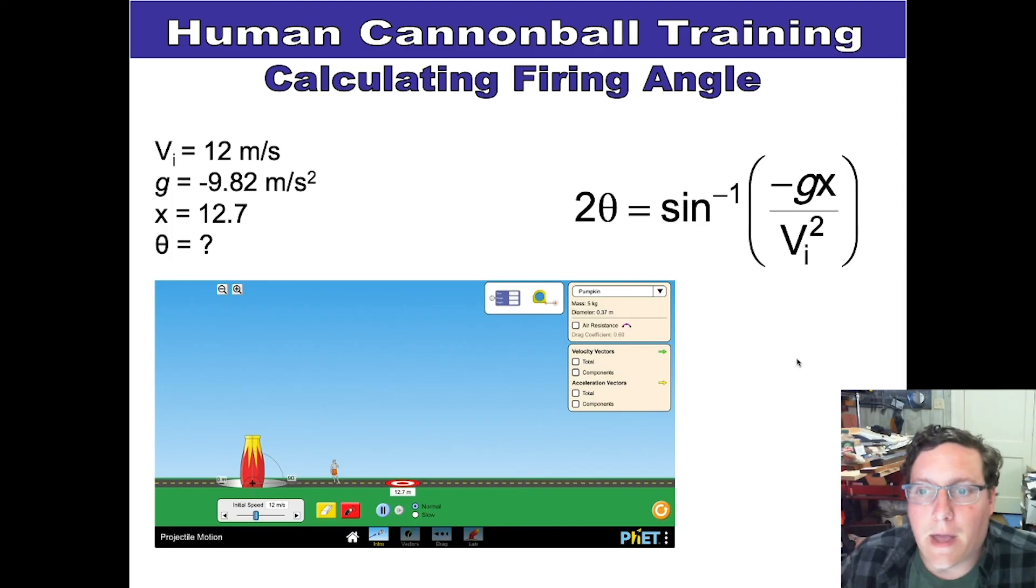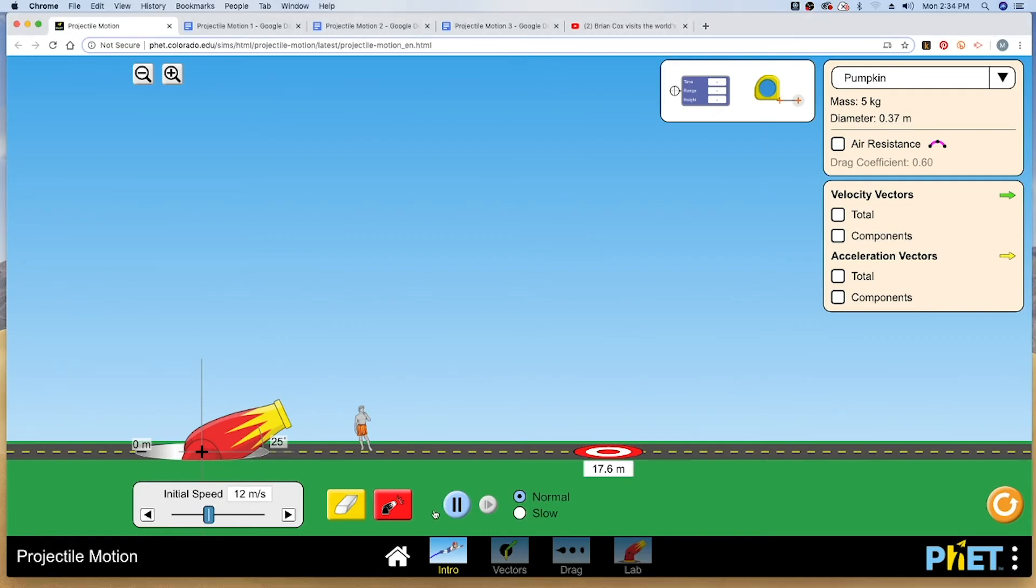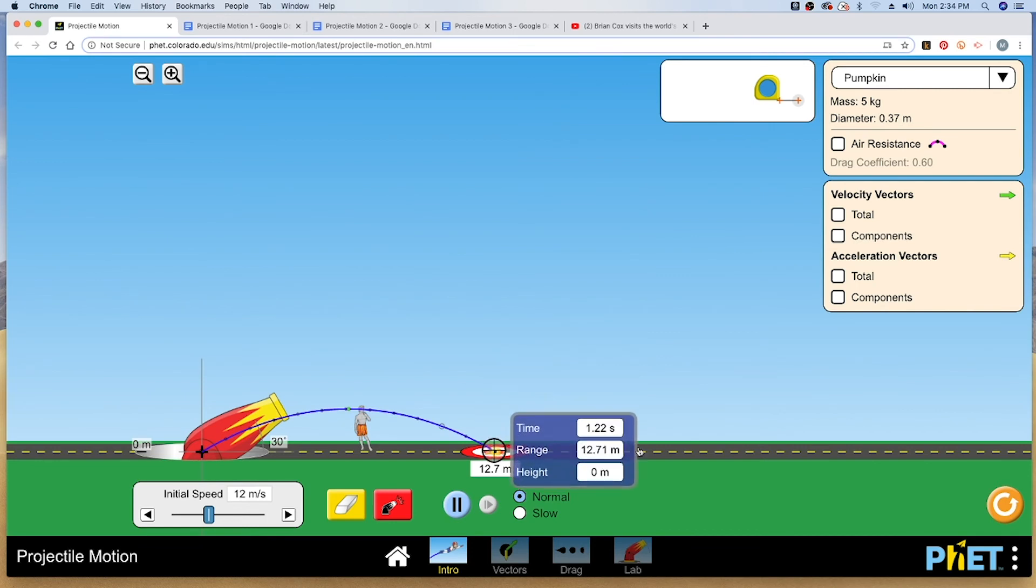So when we actually run that in the simulator, we set the cannon to a 30-degree angle with the initial speeds of 12 meters per second, and we find out that basically the math checks out.